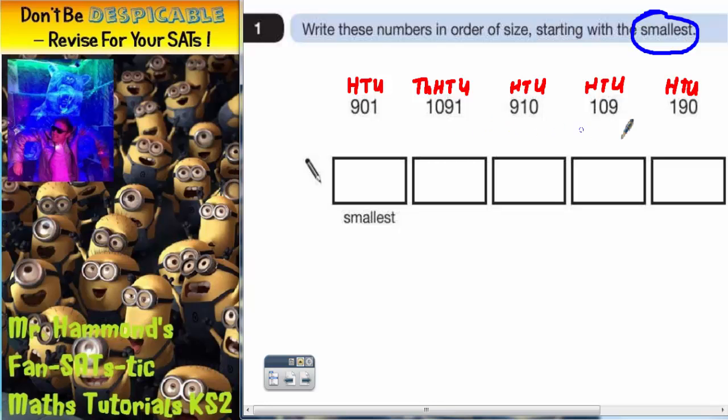So the smallest hundreds are these ones with 100 and 100 here. So which is smaller out of these two? Well it's going to be 109.